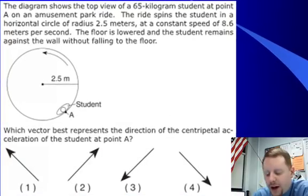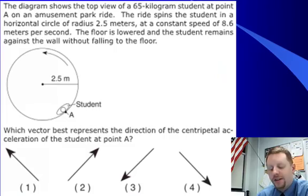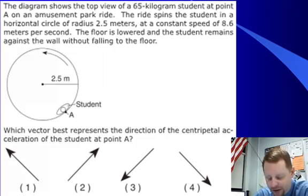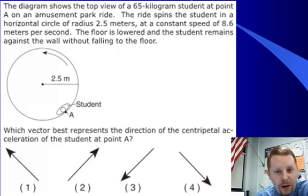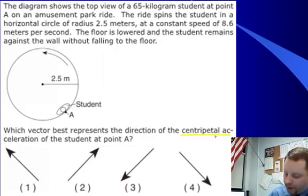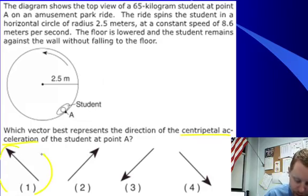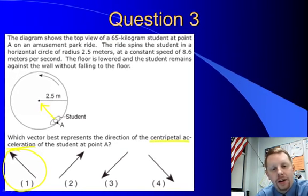Question three, now we're showing the top of a 65 kilogram student at point A on an amusement park ride, so we're looking down. The ride spins the student in a horizontal circle of radius 2.5 meters at a constant speed of 8.6 meters per second. The floor is lowered and the student remains against the wall without falling to the floor. Which vector best represents the direction of the centripetal acceleration of the student at point A? Well, there's a great analysis we can do with these types of problems, but we don't have to go very deep here. If we want to know the direction of the centripetal acceleration, remember again, centripetal just means center seeking, toward the center of the circle. So without any further thought, we can right away choose the answer 1, because at position A, toward the center of the circle lines up with the arrow under choice 1.